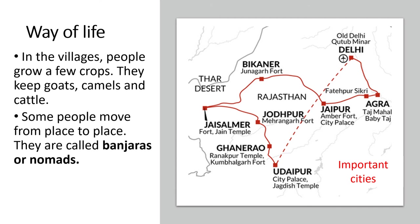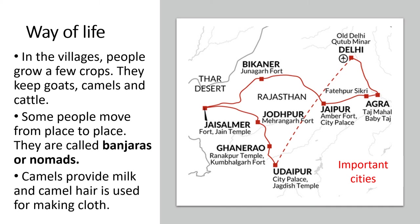Due to lack of water and vegetation, some people move from place to place instead of settling in one particular area. They are called banjaras or nomads. Camel carts are used as a means of transportation. Camels provide milk and camel hair is used for making cloth.